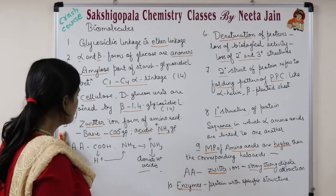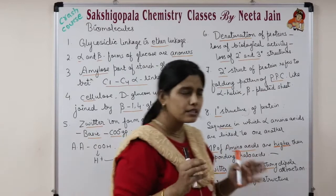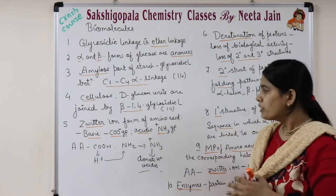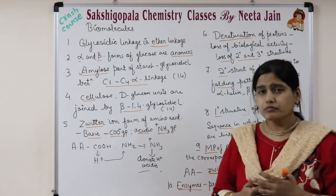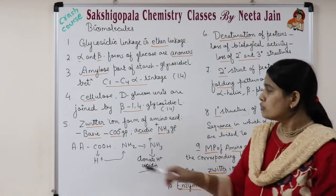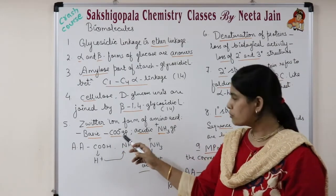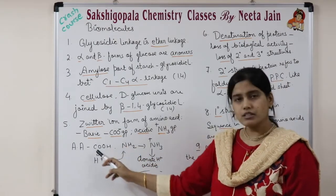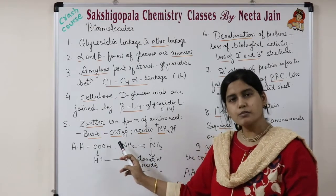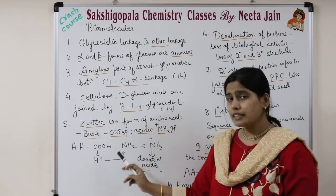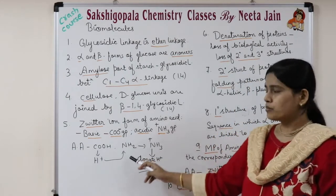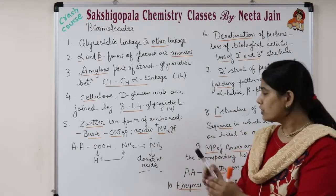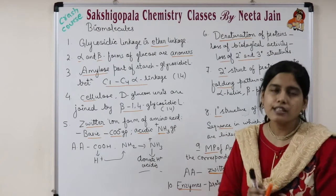Coming to the next point about the zwitterion form of amino acids — amino acids are basically present in the zwitterion form. In the zwitterion form, the basic group is COO⁻ and the acidic group is NH₃⁺. What happens is that the COOH group, which is the acidic group present in the amino acid, donates an H⁺ ion, and that H⁺ is accepted by the NH₂ group. So NH₃⁺ behaves like an acidic group.